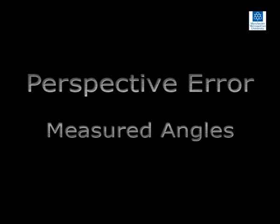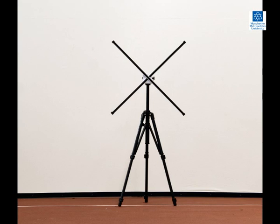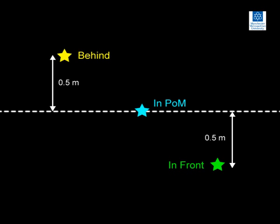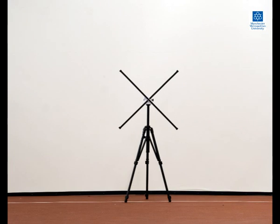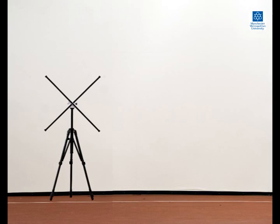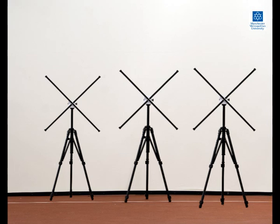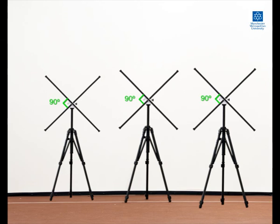To demonstrate the effect of perspective on angles between objects, a cross was constructed from two 1m rulers and placed on a tripod. Right angles were formed where the metre rulers intersect. With the camera in the far position, images of the cross were recorded with it located in the plane of motion and parallel to the plane of motion, both half a metre behind and in front of the plane. The measured angle at the centre of the cross is the same, i.e. 90 degrees, in all three locations. Thus, providing the cross remains parallel to the plane of motion, its angles are unaffected by its distance either behind or in front of the plane. Therefore, angles are also unaffected by the distance between the camera and the plane of motion.